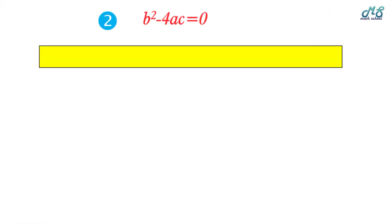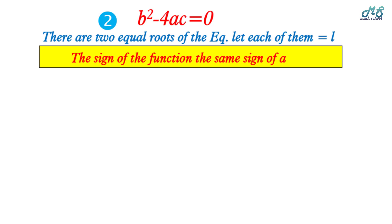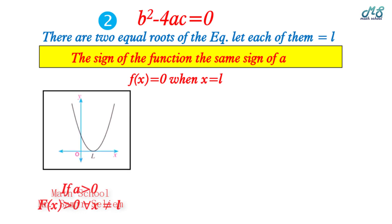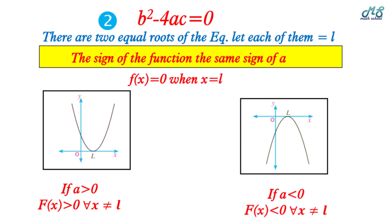Second condition: if Δ = b² - 4ac = 0, there are two equal roots; let each equal l. The sign of the function is the same as the sign of a. f(x) = 0 when x = l. If a > 0, f(x) > 0 (positive) for all x ≠ l. If a < 0, f(x) < 0 (negative) for all x ≠ l.